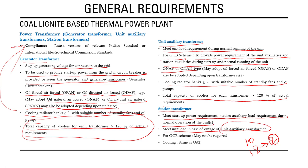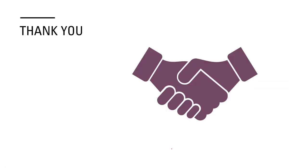If the unit auxiliary transformer is unavailable, the station transformer must supply the required auxiliary load. In a GCB scheme, a station transformer may not be needed if auxiliary power can be taken from the unit itself. Without a GCB scheme, a station transformer is generally needed. This concludes the overview of the technical standard for construction of electrical lines and electrical plants.